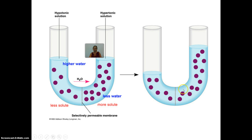Here, where you have less solute, you have more water. Where you have more solute, you have less water. Water travels from high to low concentration, so you'll see an increase in water on the side where it was low. Now equilibrium is reached — equal amounts of solute versus water on both sides.